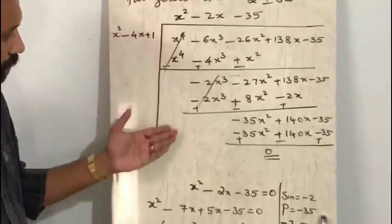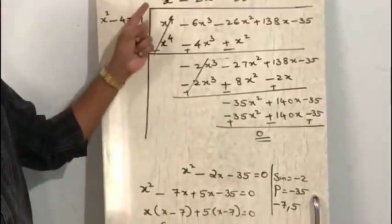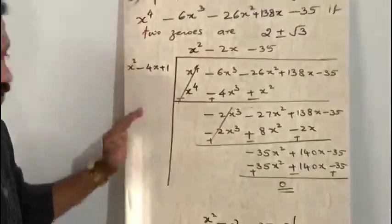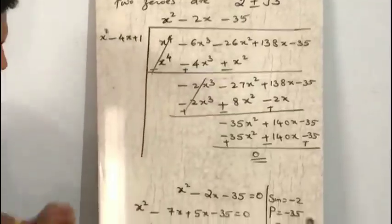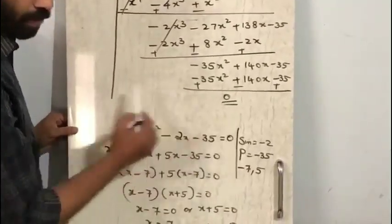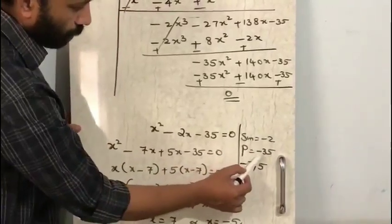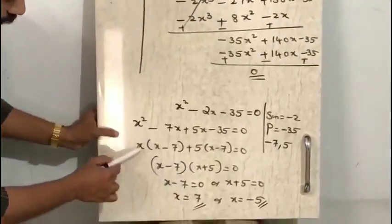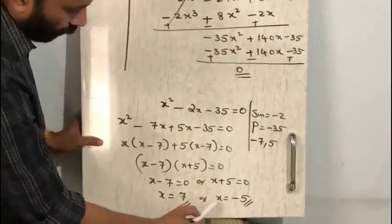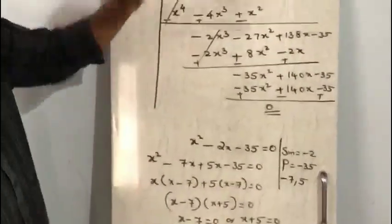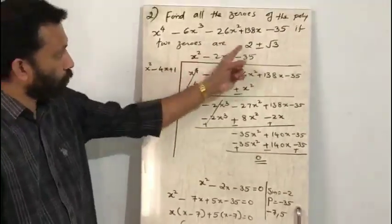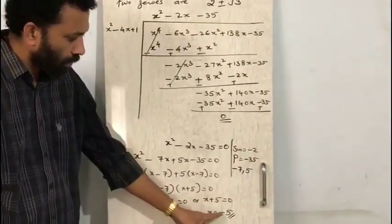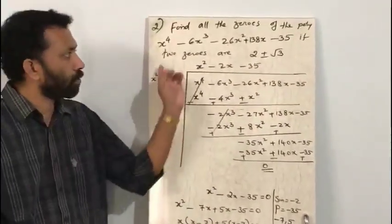After performing the division, the quotient is x² − 2x − 35. Equating the quotient to 0: x² − 2x − 35 = 0. Sum is −2, product is −35, so the numbers are −7 and 5. Splitting the middle term and solving gives x = 7 and x = −5. Therefore the four zeros of this polynomial are 2 + √3, 2 − √3, 7, and −5.